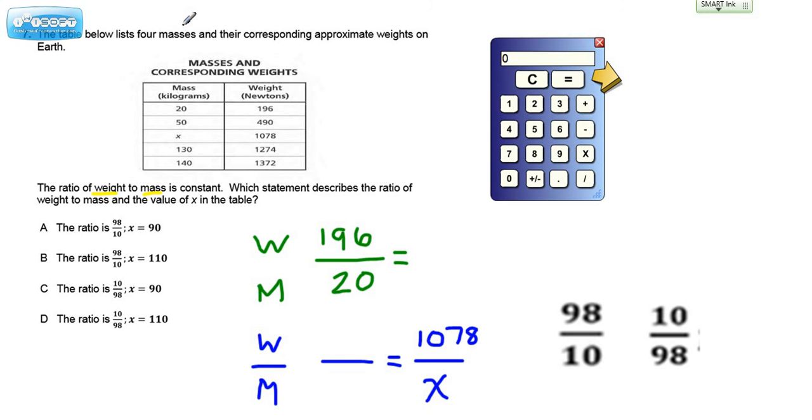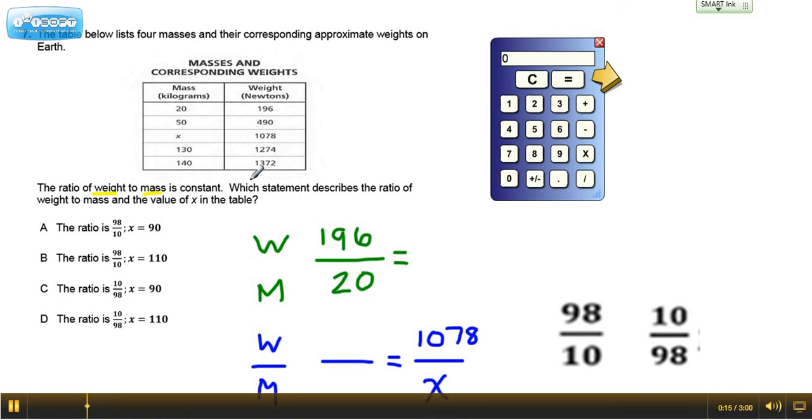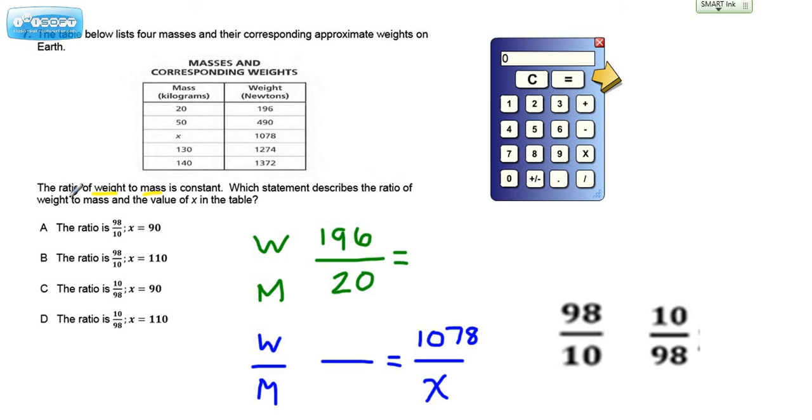The table below lists four masses and their corresponding approximate weights on Earth. Here's the table. The ratio of weight to mass is constant. Which statement describes the ratio of weight to mass and the value of x in the table?